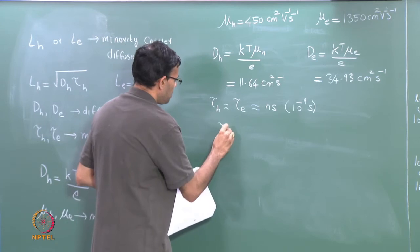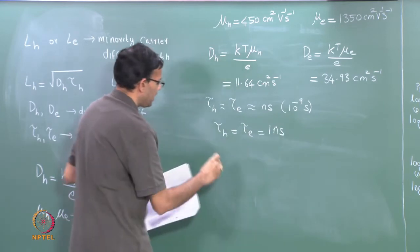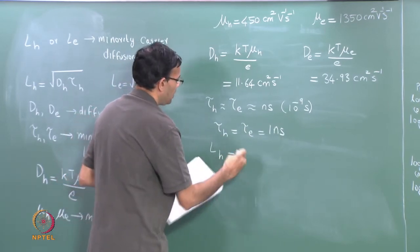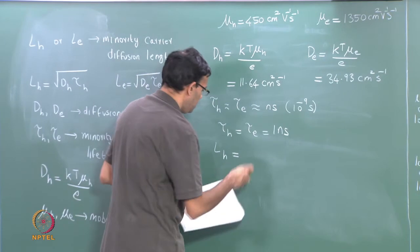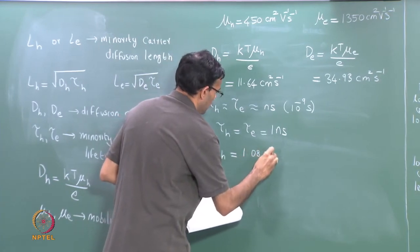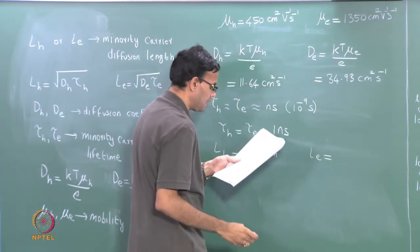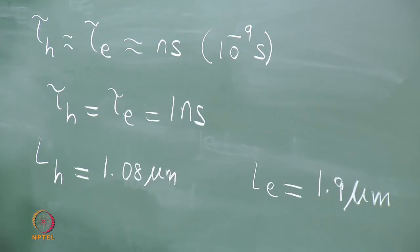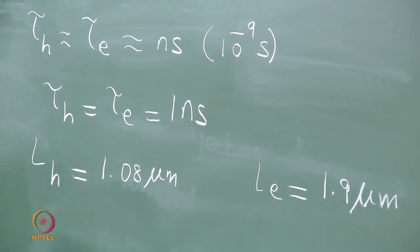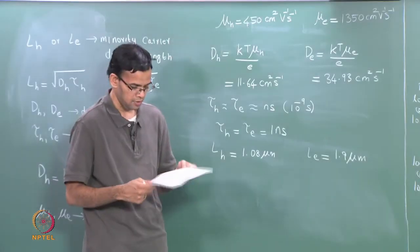If I take tau_H equal to tau_E to be 1 nanosecond, we can calculate the diffusion length L_H. L is nothing but the square root of D times tau. So you get L_H to be around 1.08 micrometers and L_E by similar calculation to be around 1.9 micrometers. L_H and L_E refer to the diffusion length of these extra electrons and holes before they ultimately recombine with the majority carriers and get eliminated.